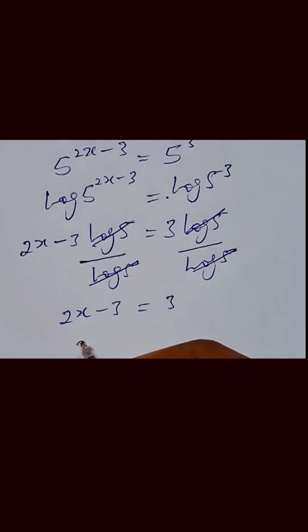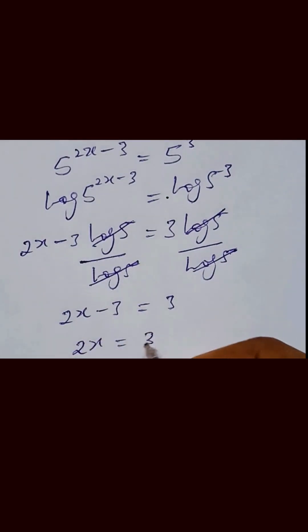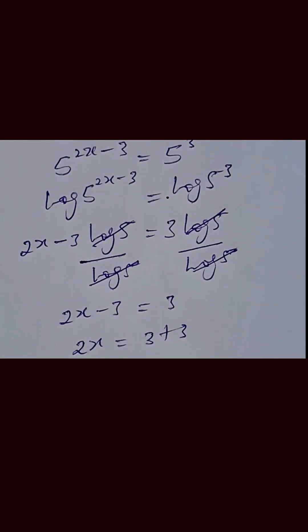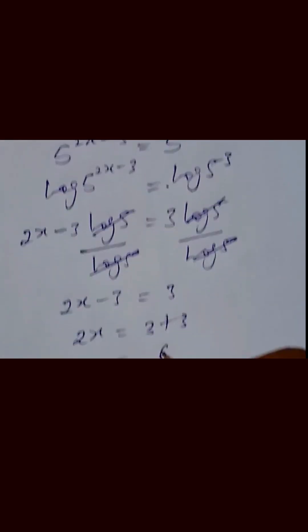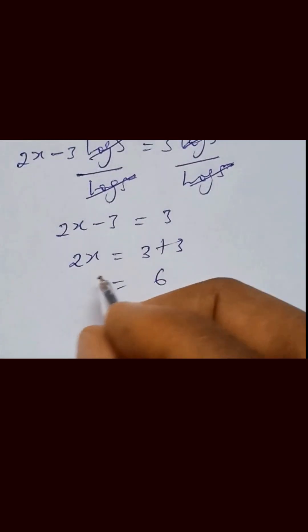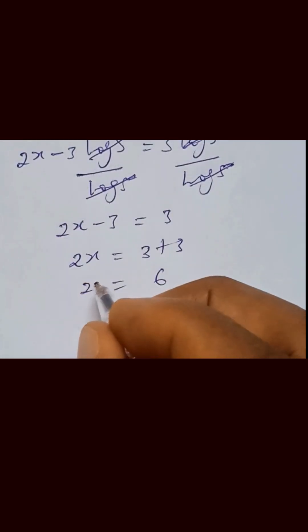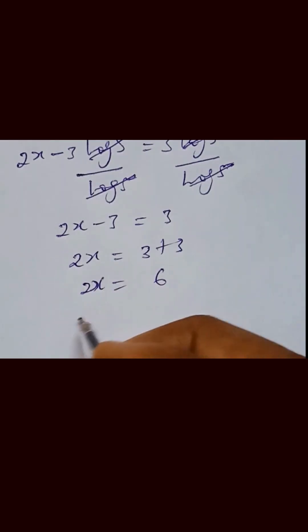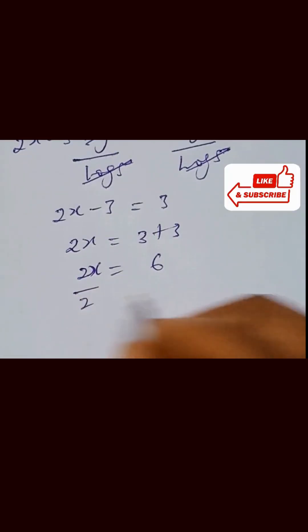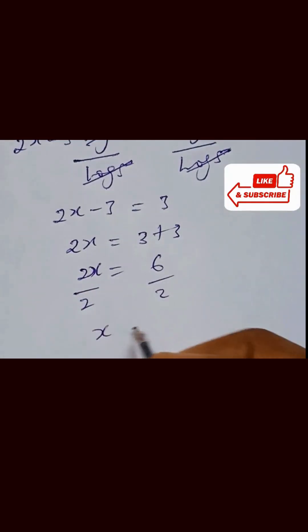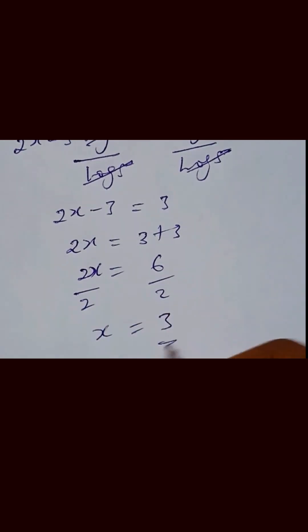We have 2x equals to 3 plus 3, which is equal to 6. Divide both sides by 2, and x equals to 3.